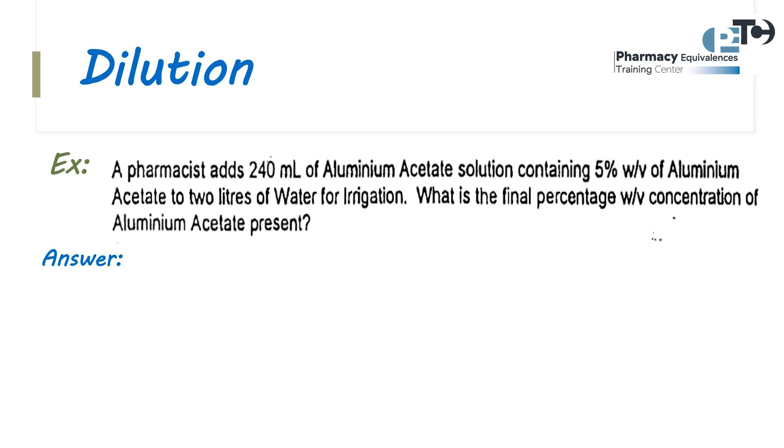240 milliliters of aluminum acetate solution containing 5% weight per volume of aluminum acetate to two liters of water for irrigation. To start solving this problem, we want firstly to know what is given and what is unknown.